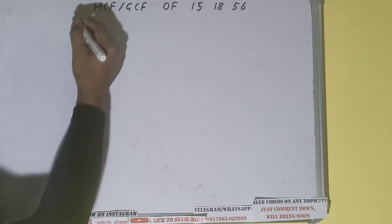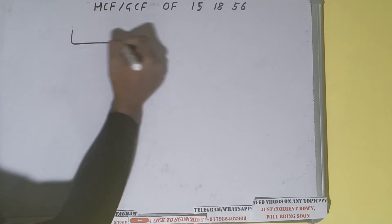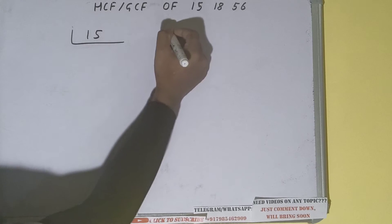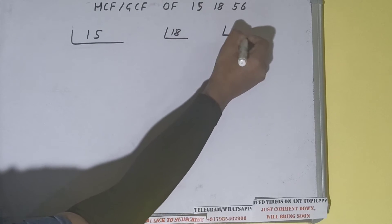Hello friends, in this video I'll be helping you with the HCF or the GCF of the numbers 15, 18, and 56. So let's start. First of all, we need to do the prime factorization of each of the numbers separately — first 15, then 18, and then 56.